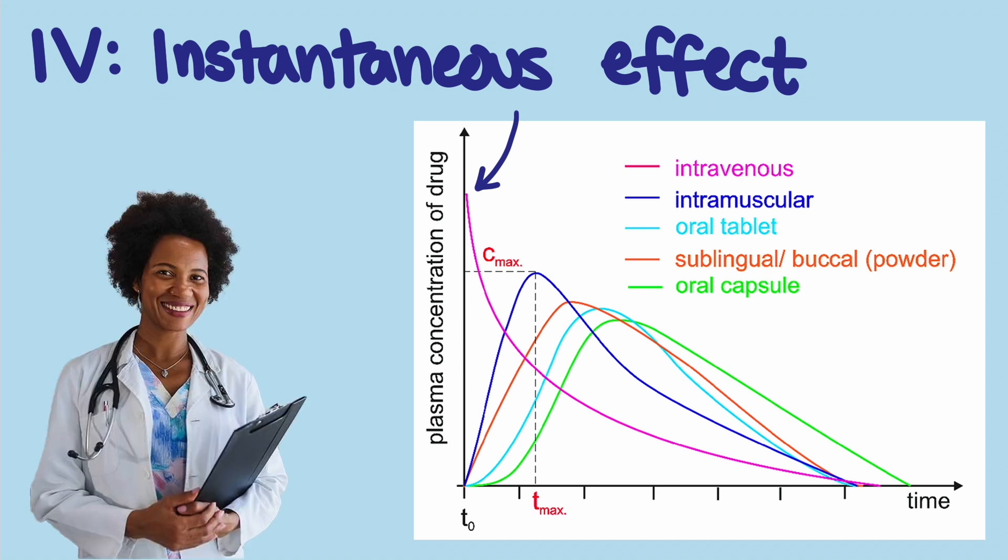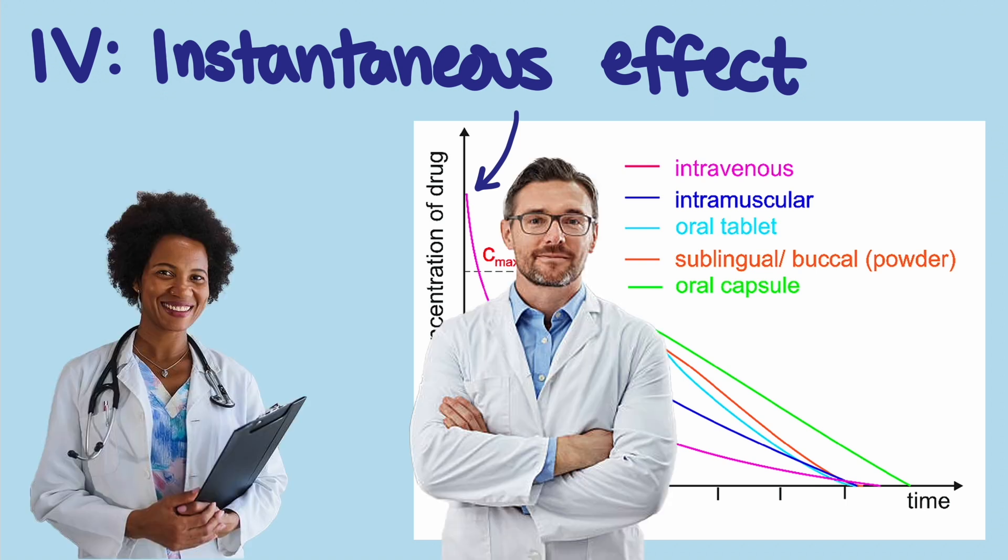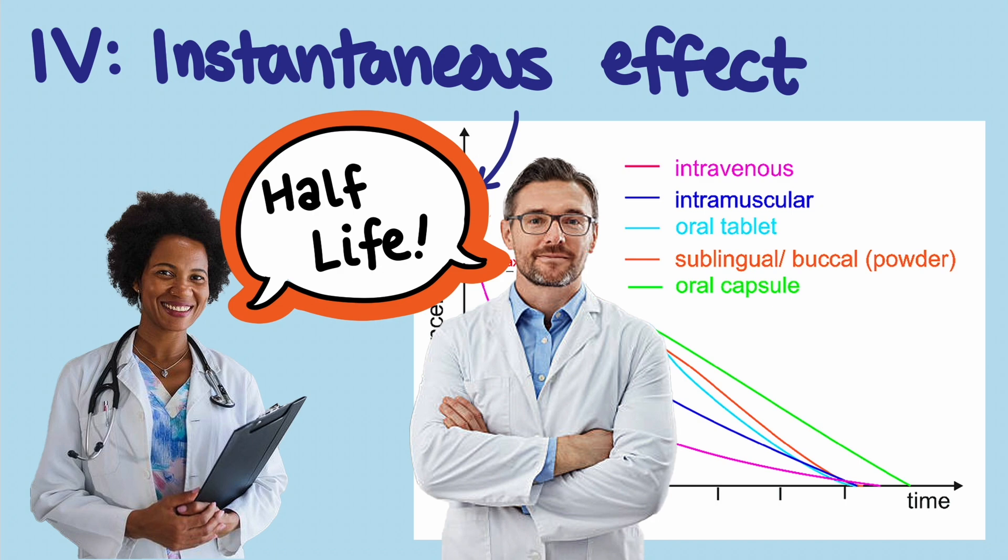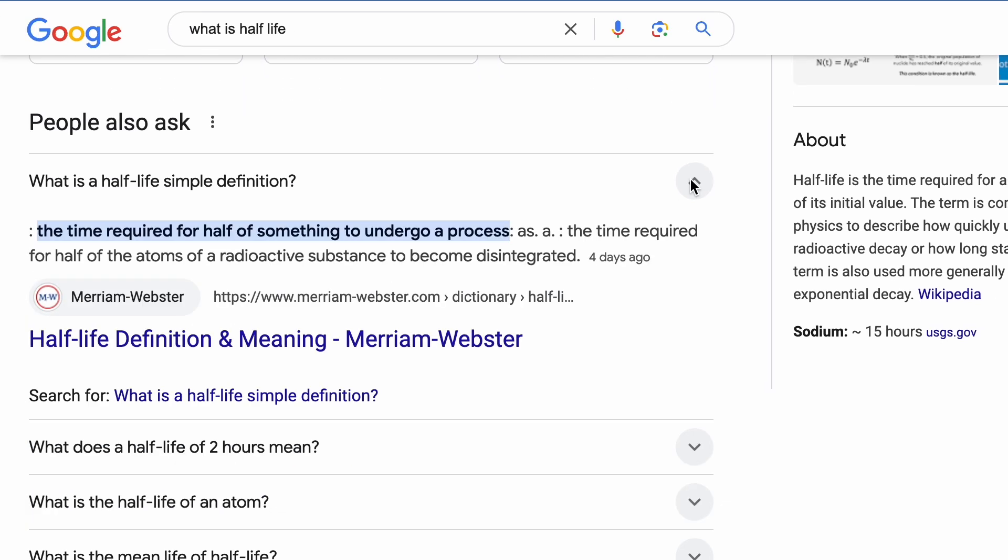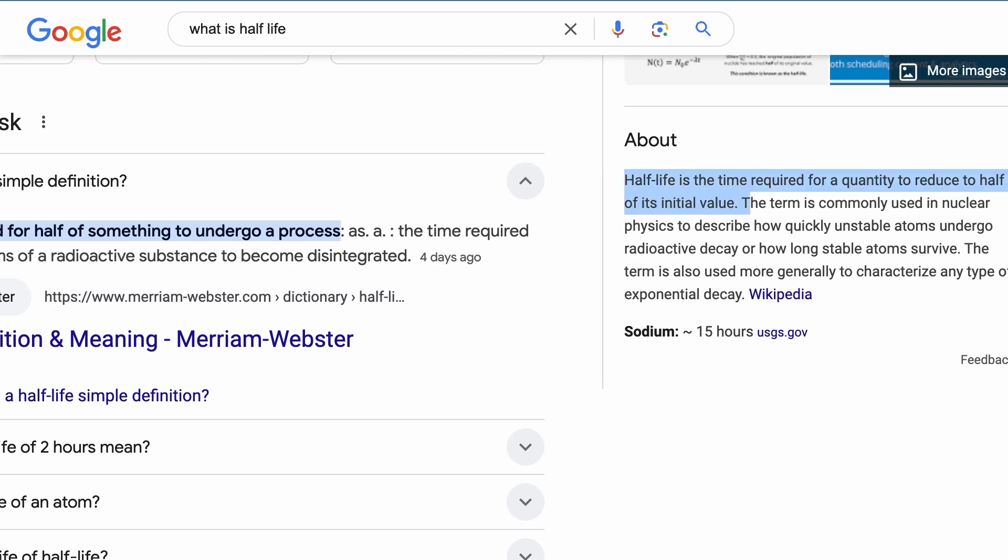One way doctors and pharmacists talk about how fast blood is eliminated from the body is through the idea of half-life. The half-life of a drug is the time it takes your body to take half the medicine out of your blood, or in other words, reduce the blood concentration by half.